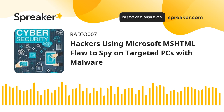The attack sequence described by Safe Breach begins with the targets receiving a spear phishing email that comes with a Word document as an attachment. Opening the file triggers the exploit for CVE-2021-40444, resulting in the execution of a PowerShell script dubbed PowerShortShell that's capable of hoovering sensitive information and transmitting it to a command and control (C2) server.